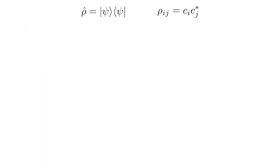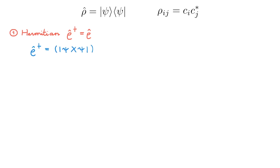Let's look at some properties of the density operator. The first is that it is Hermitian: ρ† = ρ. This is very easy to see as ρ† equals (|ψ⟩⟨ψ|)†. Remember that the adjoint of an outer product simply exchanges the order of the terms, which in this case simply gives |ψ⟩⟨ψ| again, and this is ρ.